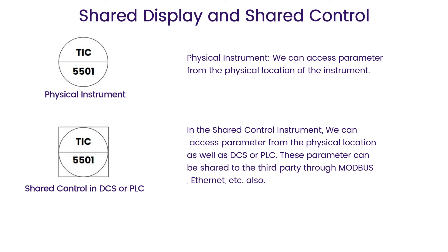These are the two instrument symbols that indicate physical instrument and instrument parameter shared control in DCS or PLC. We can access parameter from the physical location from the instrument in physical instrument type. We can access parameter from the physical location as well as we can also access instrument parameter from the DCS or PLC.